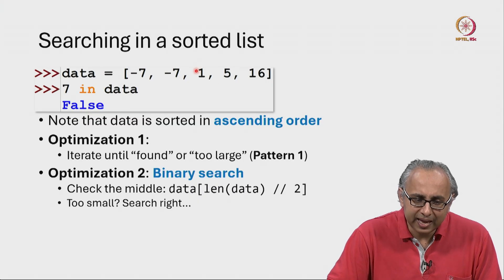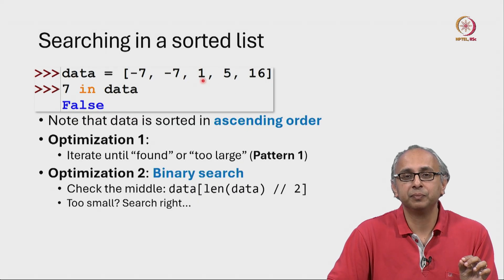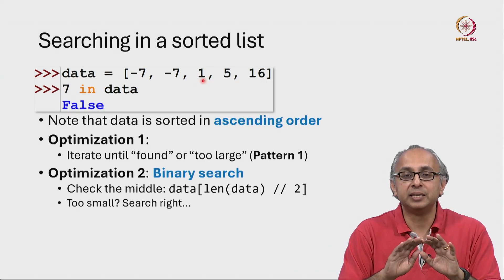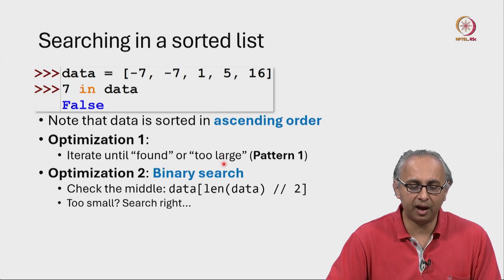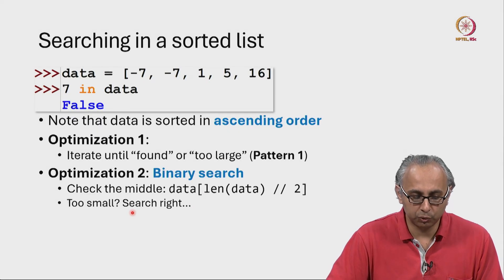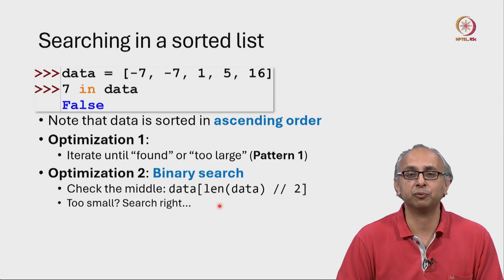So by examining the middle item, we can immediately decide whether we are done or whether we can chop off one half of this list. So if it is too small, we can search to the right.